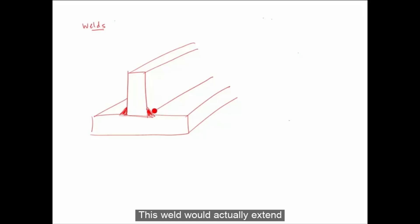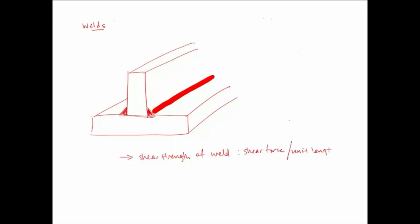So the shear strength of the weld is given as a shear force per unit length. So now we can simply equate the required shear flow with the shear strength of the weld. And for design, we usually look for the width of the weld or the length of the weld. And the weld itself can be continuous or it can be intermittent.